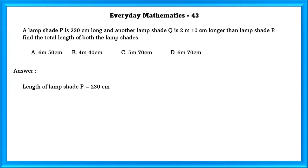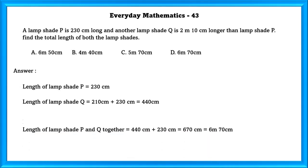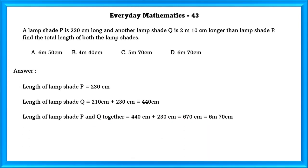Length of lampshade P is equal to 230 centimeters. Length of lampshade Q is equal to 210 centimeters plus 230 centimeters, which is equal to 440 centimeters. Length of lampshade P and Q together is equal to 6 meters 70 centimeters.